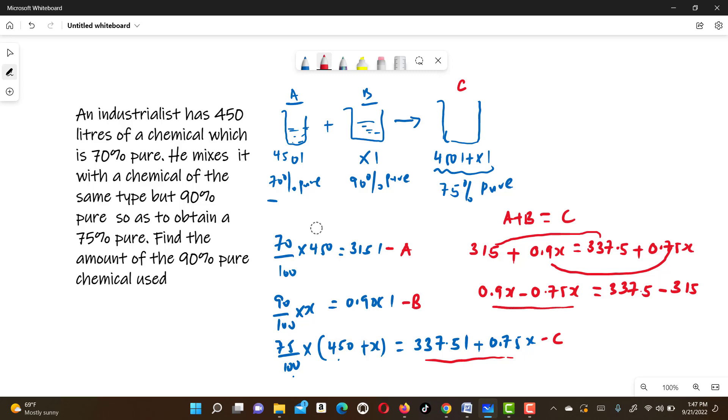The result of this will be 0.15X equals 22.5. Dividing both sides by 0.15, we get the value of X as 150 liters.